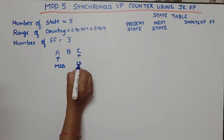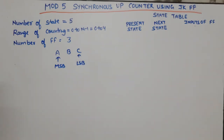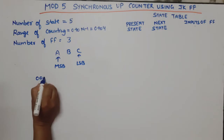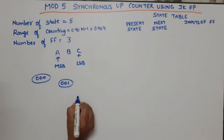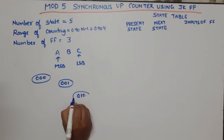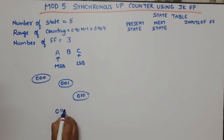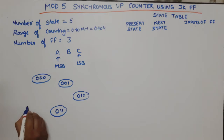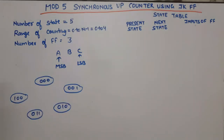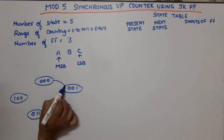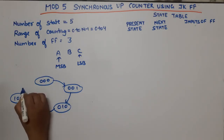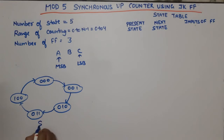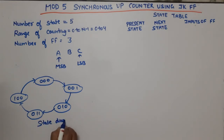Now let's draw the state diagram. Starting from state 0 (000), we go to 1 (001), then 2 (010), then 3 (011), then 4 (100), and then 4 returns back to 0. So the counting sequence is 0, 1, 2, 3, 4, and then back to 0. This is the state diagram for the mod-5 counter.